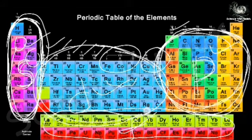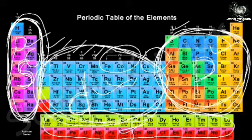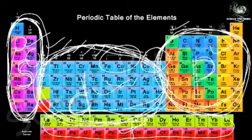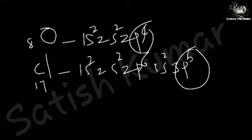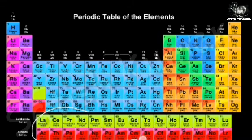For d-block elements, if you write the electronic configurations of elements in groups 1B to 8B, the last electron will definitely enter a d orbital, so these are called d-block elements. Similarly, the f-block elements are called so because the last electron of these elements enters an f orbital.